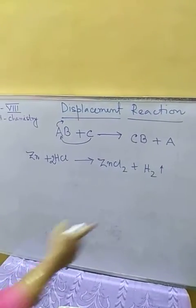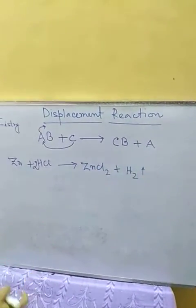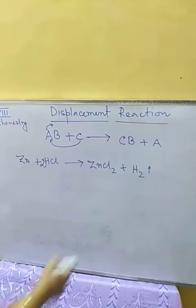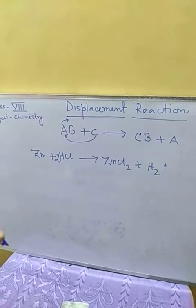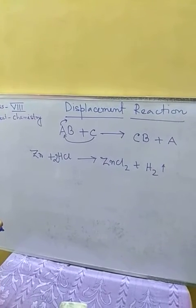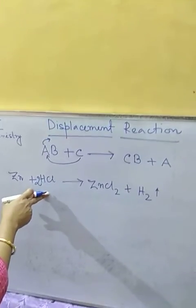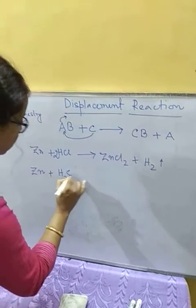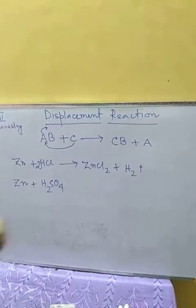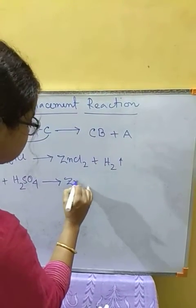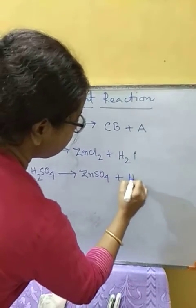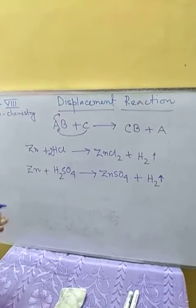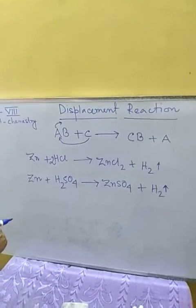From this reaction we can easily prepare hydrogen gas. Zinc chloride remains in solution and hydrogen gas evolves. Similarly, if we take dilute sulfuric acid (H₂SO₄), it will produce zinc sulfate (ZnSO₄) along with hydrogen gas. All metals more reactive than hydrogen can show this kind of reaction.